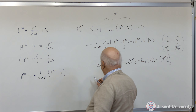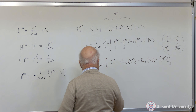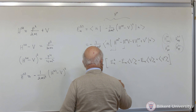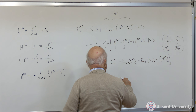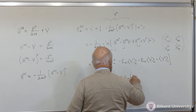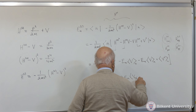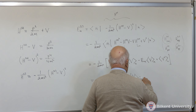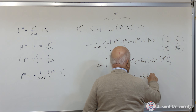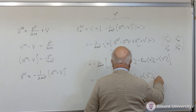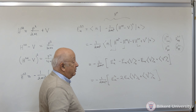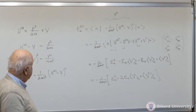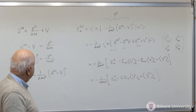So I'm going to get minus 1 over 2mc squared, and I get En squared, minus 2En times the expectation value of V in the nth state, plus the expectation value of V squared.